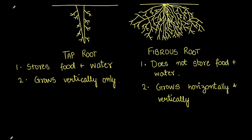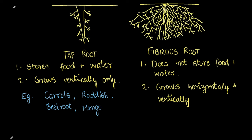Let's get into examples. Examples of taproots are carrots, radish, beetroot, and mango. Carrots and radish look exactly like the taproot shown here. For fibrous roots, rice has fibrous roots, and so do maize and wheat.